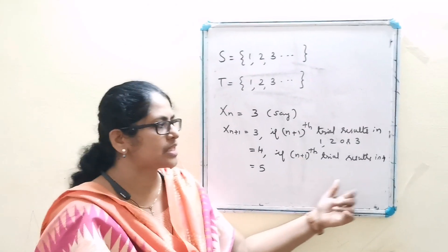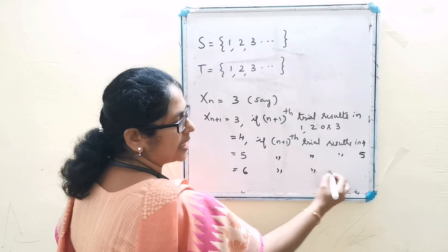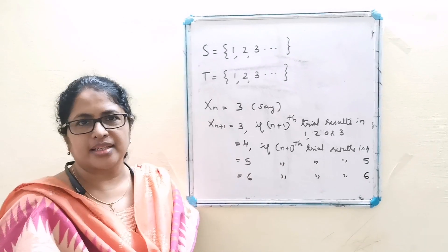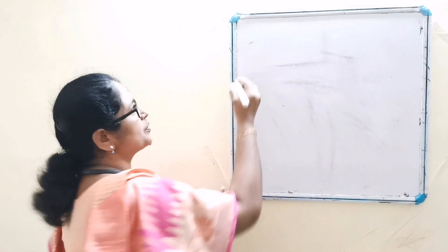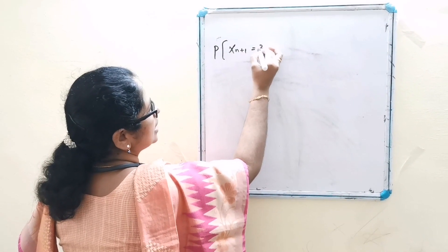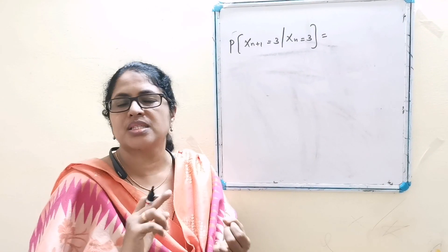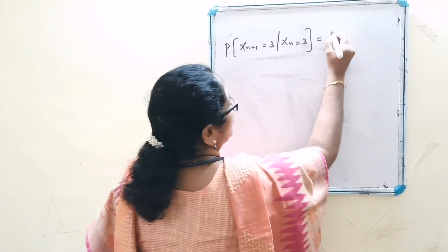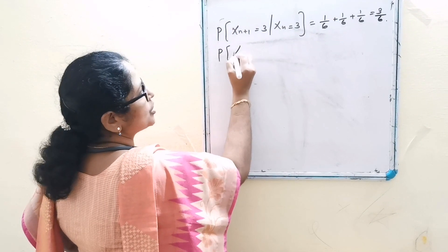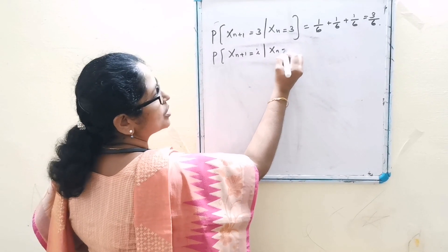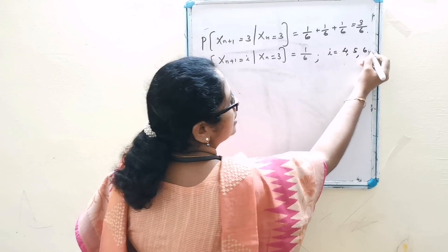Xn+1 equal to 5 if the (n+1)th trial results in 5, and Xn+1 equal to 6 if the (n+1)th trial results in 6. The probability of Xn+1 equal to 3 given Xn equal to 3 is 1/6 + 1/6 + 1/6 = 3/6. The probability of Xn+1 equal to i given Xn equal to 3 is 1/6, where i can take values 4, 5, and 6.